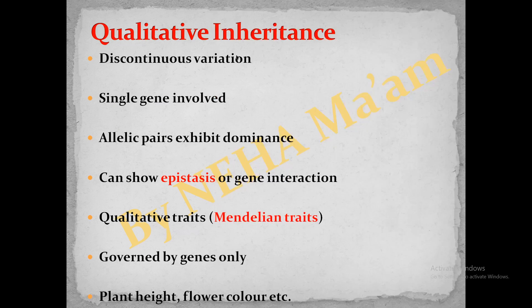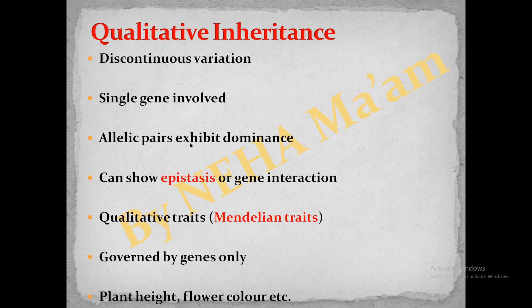First of all, we are going to discuss what is qualitative inheritance. Inheritance of qualitative traits, or Mendelian traits, refers to qualitative inheritance. This shows discontinuous variation in the F2 progeny, meaning there would be distinct phenotypic classes. This type of inheritance is controlled by a single gene having two alleles, and the allelic pairs exhibit dominance — that is, one allele would be dominant over the other.